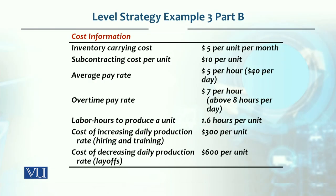On this basis, inventory carrying cost is $5 per unit per month. Subcontracting cost, which was used in the previous plan, is $10 per unit. Average pay is $5 per hour and there are 8 hours per day, so regular pay is $40 per day per worker.